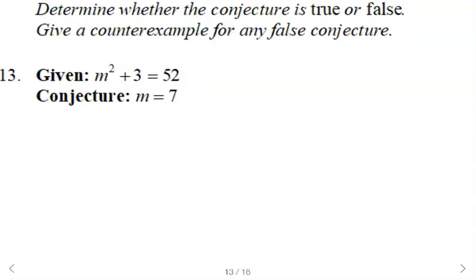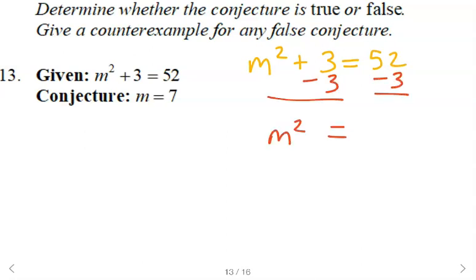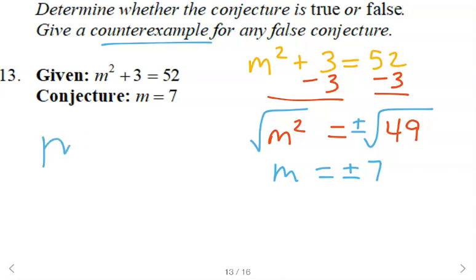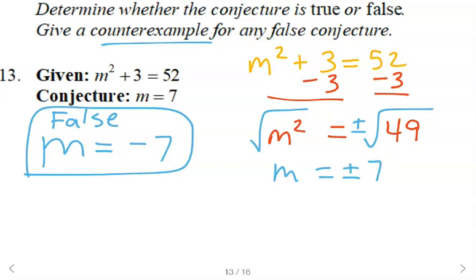Determine whether the conjecture is true or false. Is 7 the only solution here? Well, if we take this equation and solve it, subtract 3 from each side, we get m squared equals 49. And then to get rid of squared, we'll square root. When you take the square root of both sides of an equation, you should write positive or negative on one side. So we get the positive or negative square root of 49, which is positive or negative 7. So our counterexample is that m could equal negative 7. So we would say false. Because m could equal negative 7. So a true conjecture here would have to say m is 7 or negative 7.